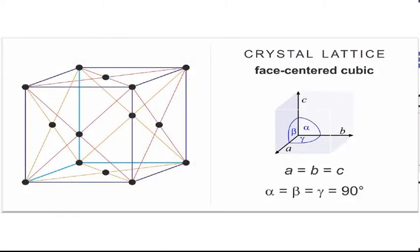The next one is the face centered cubic. In the face centered cubic we see that in a particular lattice there are a total of 14 lattice points — 8 at the corners, just like simple cubic, and in addition to those 8 corners, we have 6 atoms at each of the face centers. At the center of each face there is an atom, and since a cube has 6 faces, that is why this one is called a face centered cubic lattice.